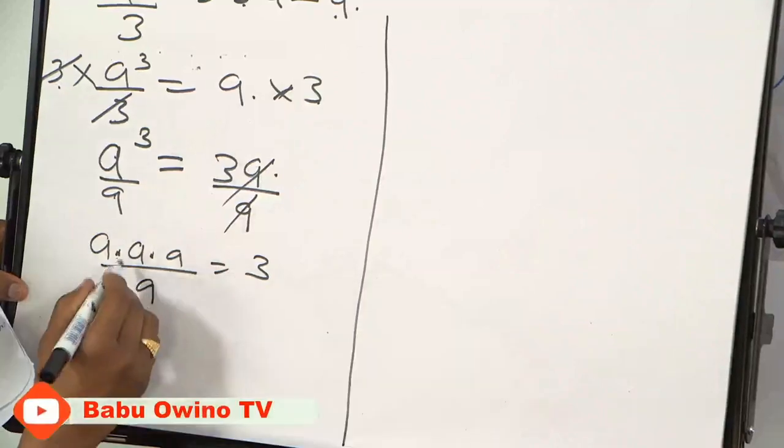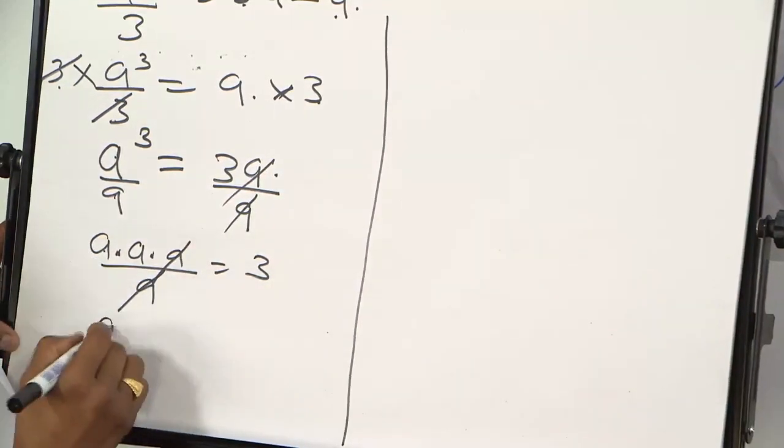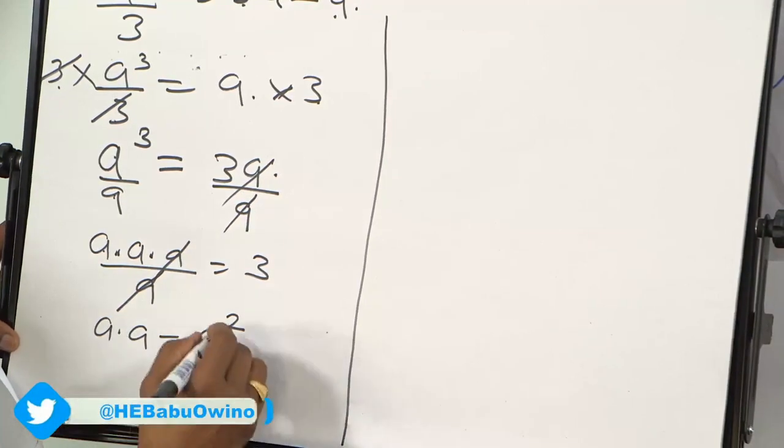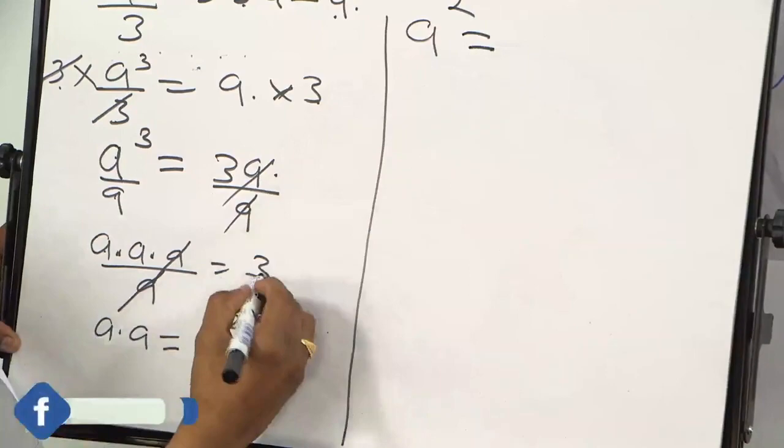So from here A can cancel one A. Then you remain with A times A which can be written as A squared. So A squared equals to 3.